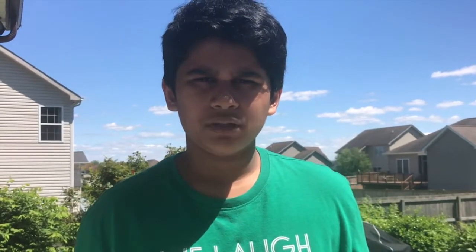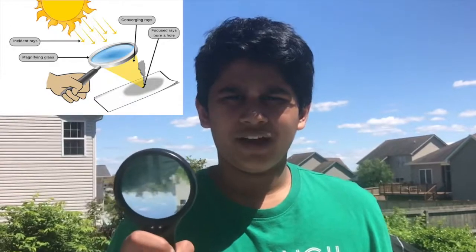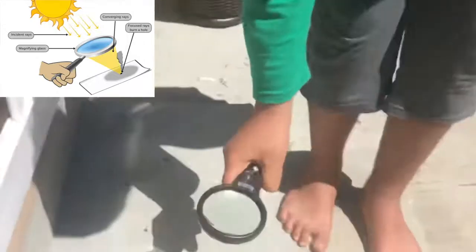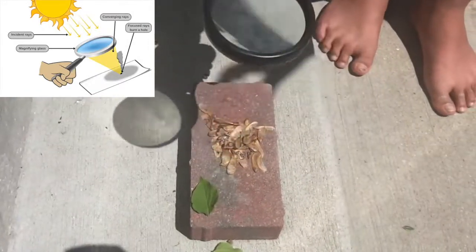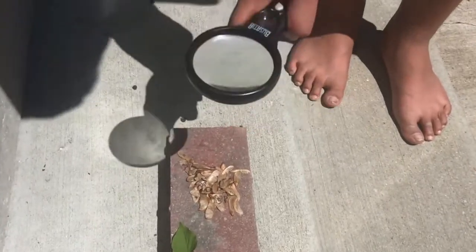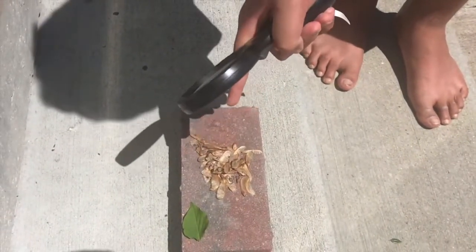So, I'm going to be doing another experiment, which is demonstrating a characteristic of light. So, I'm going to be using a magnifying glass, which has a convex lens. So, whenever I point this at the leaves, the light rays from the sun focus on the convex lens, and then it causes these leaves to burn. So, let's get to it.